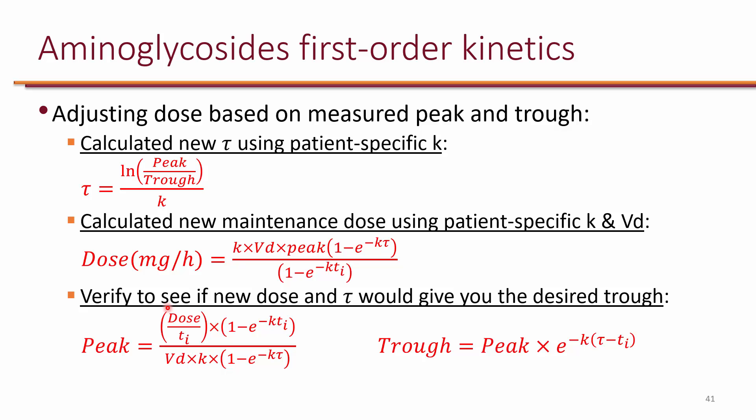Once we get the dose and tau, then we can actually verify to see if the new dose and frequency is going to give us the peak and trough that we want. So we can actually use this to estimate what peak we can expect from this dose and frequency. You plug it in and it will tell you what the peak is. And then you use this peak to see what trough it would give you. And that's how you verify to see if the dose and frequency that you're about to recommend is actually going to give you the goal peak and trough. We will do exercises in class to do some calculations.